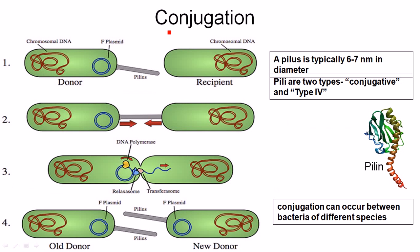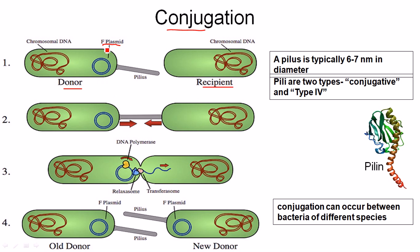Conjugation happens between two bacteria: the first is called the donor bacteria and the second is called the recipient bacteria. The donor bacteria has an F-plasmid, which means the fertility plasmid.